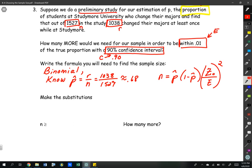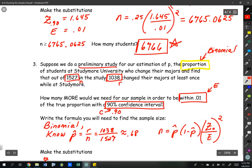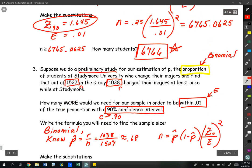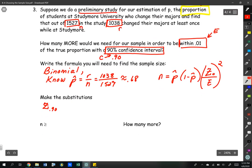Make the substitutions. We know p-hat is 0.68. We need to know the value of the z score for 0.90, which is 1.645. We need to know what E is, which we identified as 0.01. We'll make the substitutions into the formula.